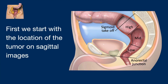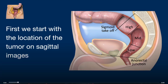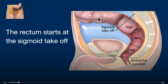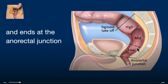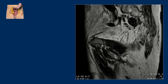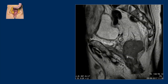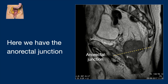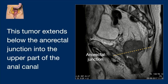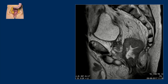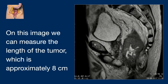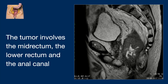We start with the location of the tumor on sagittal images. The rectum starts at the sigmoid take-off and it ends at the anorectal junction. This tumor extends below the anorectal junction into the upper part of the anal canal. We can measure the length of the tumor, which is approximately 8 cm. The tumor involves the mid-rectum, the lower rectum, and the anal canal.